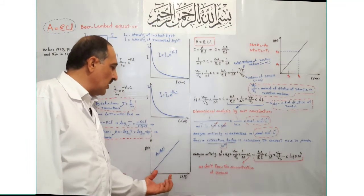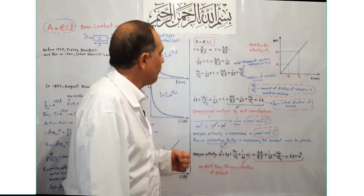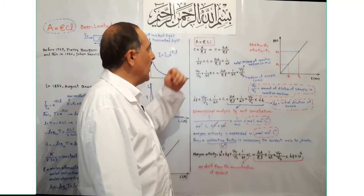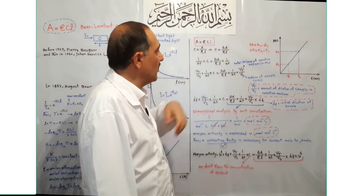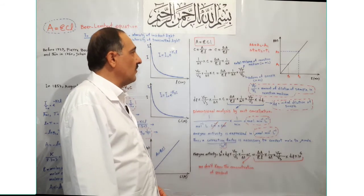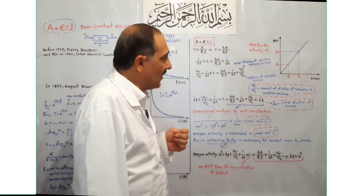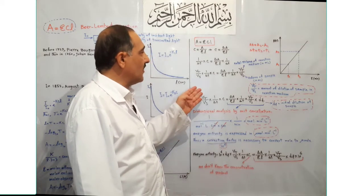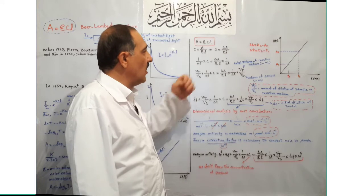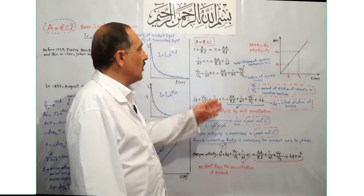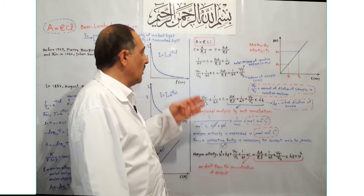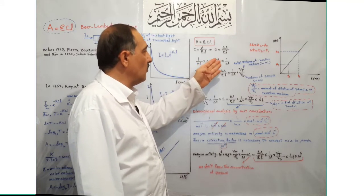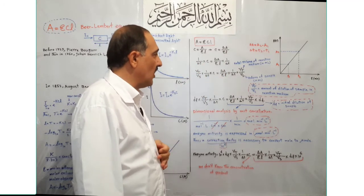ΔA is proportional to the amount of product formed. Thus, in the numerator of the concentration equation, ΔA should be placed instead of A, giving C = ΔA / (εL). ΔA is recorded within a respective time interval ΔT, where ΔT is the difference between T₂ and T₁. Therefore, ΔT must be included in the equation. Multiplying both sides by 1/ΔT gives: (1/ΔT) × C = ΔA / (εL × ΔT).